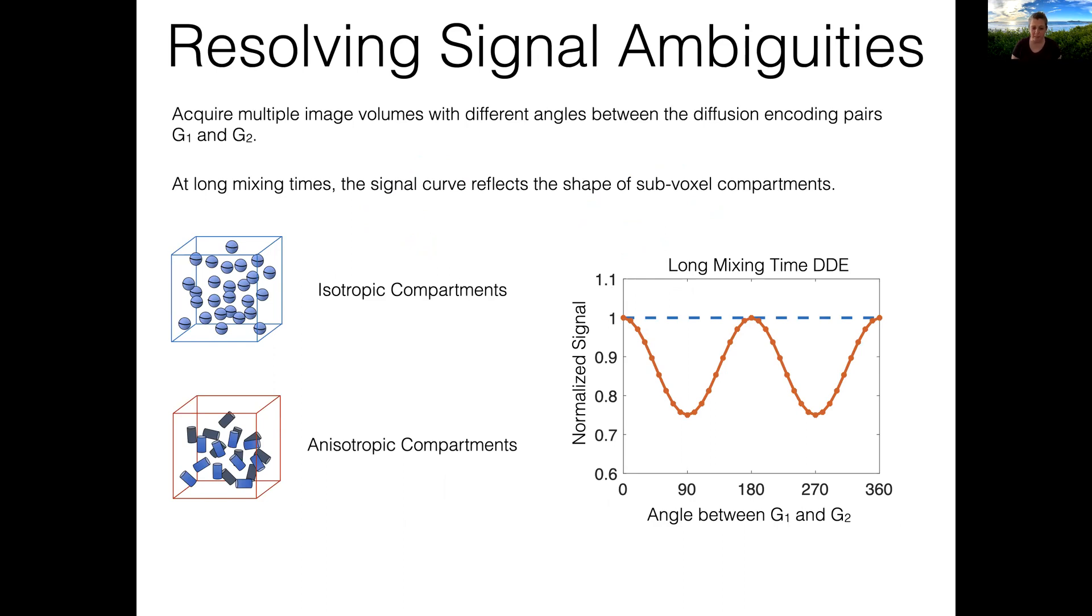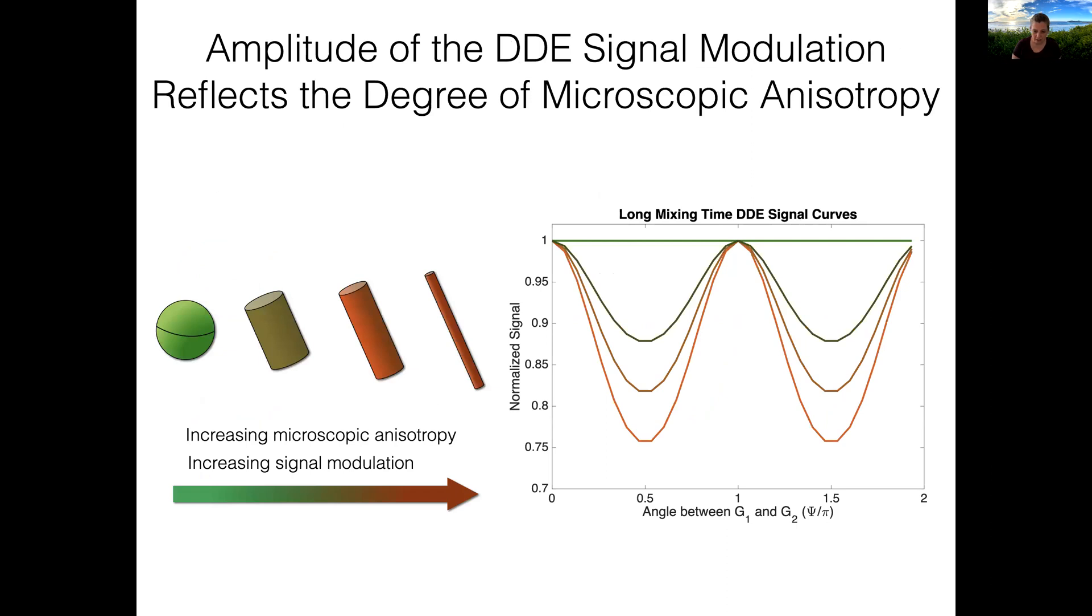We can see in this example the lack of signal modulation for the voxel with the isotropic compartments, and a sinusoidal modulation for the voxel containing anisotropic compartments. Another key feature is that the amplitude of that double diffusion encoding signal modulation, relative to the angle between the gradient encoding pairs, reflects the degree of anisotropy of the individual compartments. This is also coined the term microscopic diffusion anisotropy.